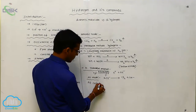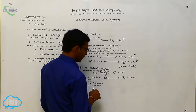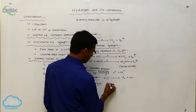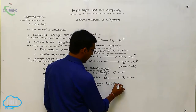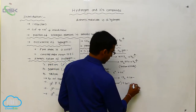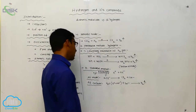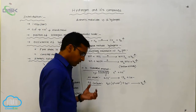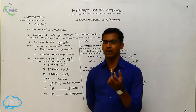At the cathode, abstraction of electrons takes place. H₂O — that is, OH⁻ — abstracts 2 electrons and liberates hydrogen gas. The water molecule undergoes electrolysis, producing H⁺ and OH⁻.